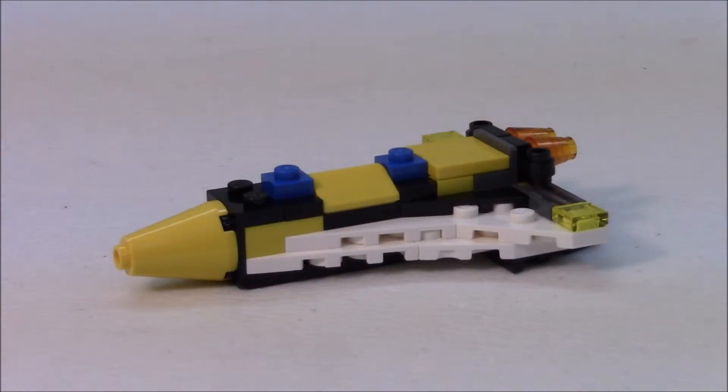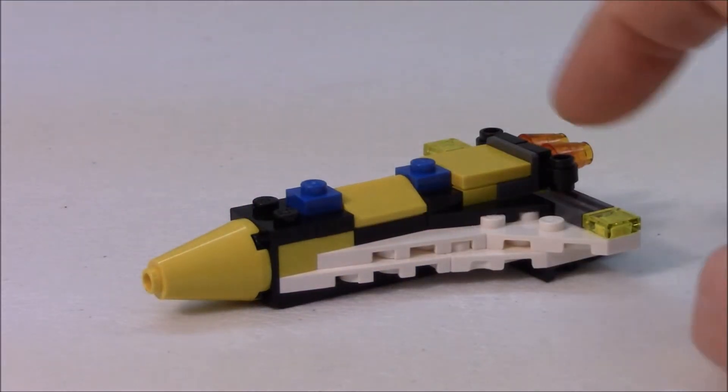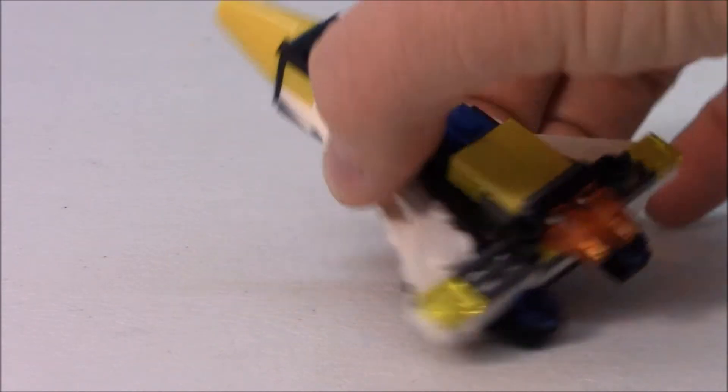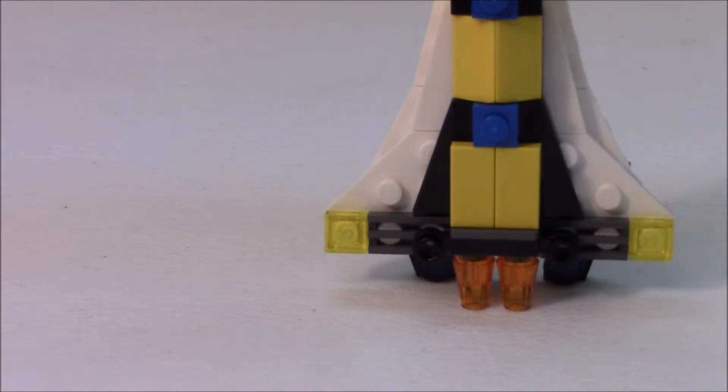Here we have our medium build for this set. And this is the Space Shuttle look-alike. I like the way that they had designed it with the slopes, obviously the cone in front, some flat one-by-two studs on the bottom. It actually gives it a shuttle look, and it will stand on its own.